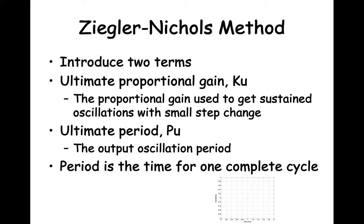When using the Ziegler-Nichols method, we are looking for the ultimate proportional gain Ku and the ultimate period Pu. The ultimate proportional gain is the gain setting used to produce the sustained cyclic process output after the process is subjected to a small step change. The ultimate period Pu is the period of the oscillating process output. Please remember that the period is the time for one complete cycle.